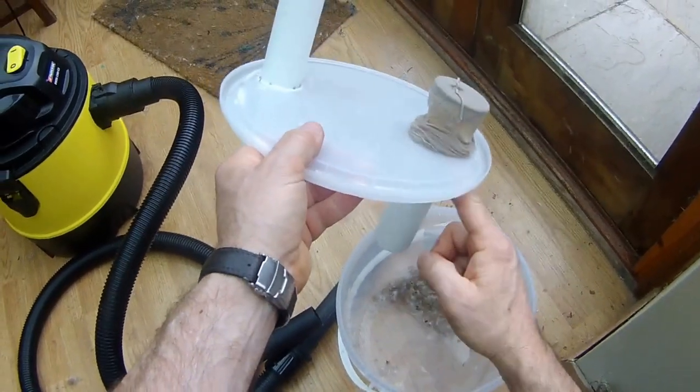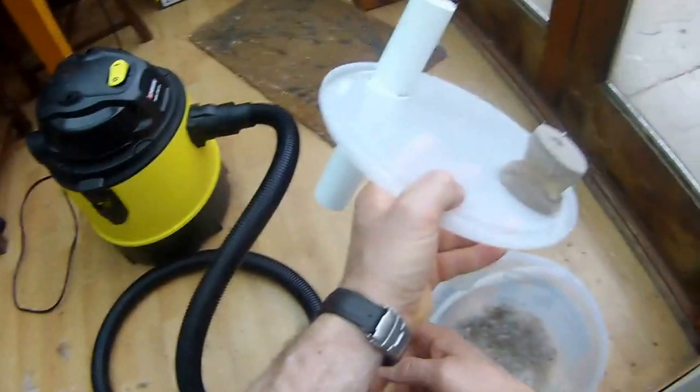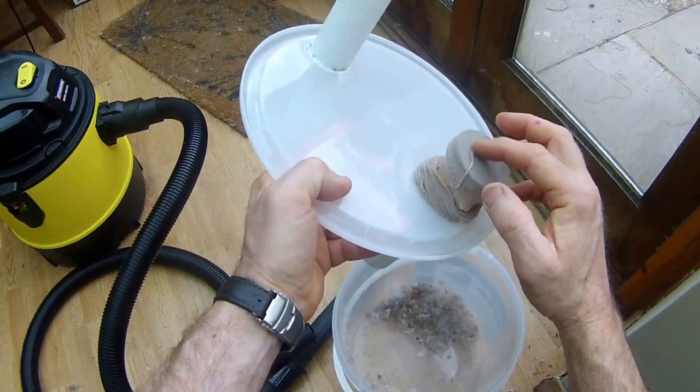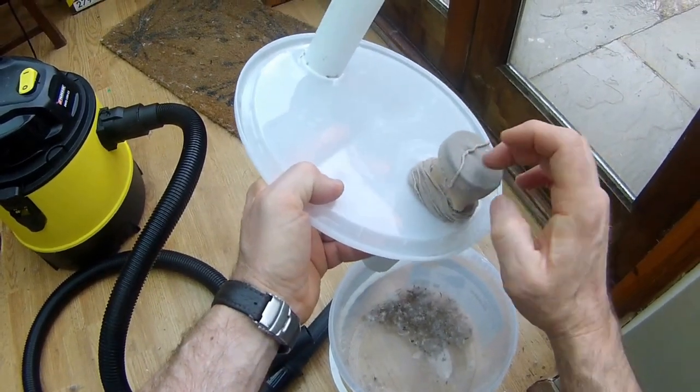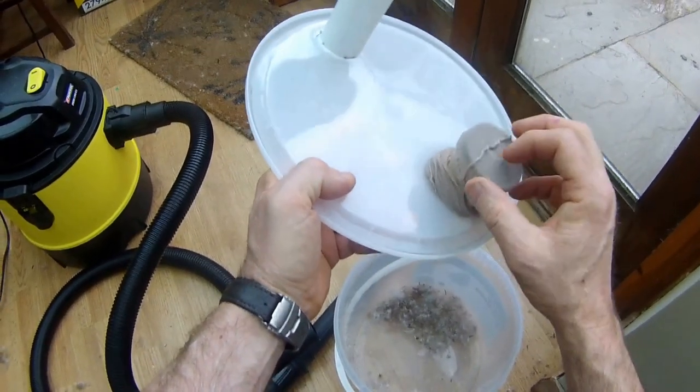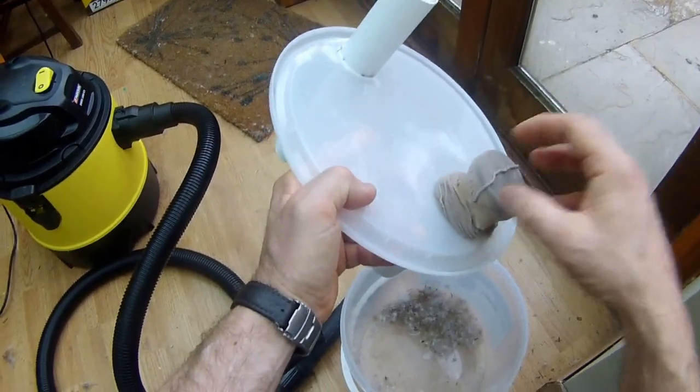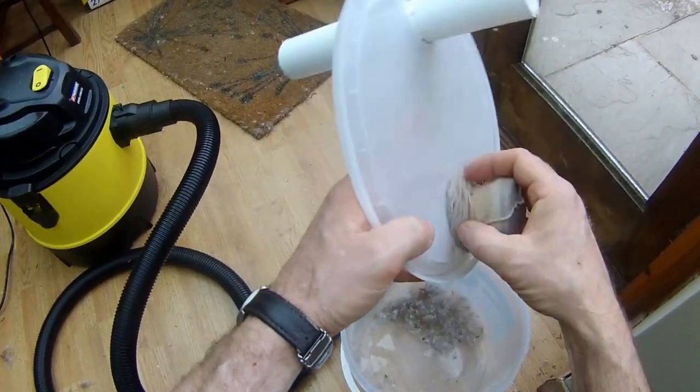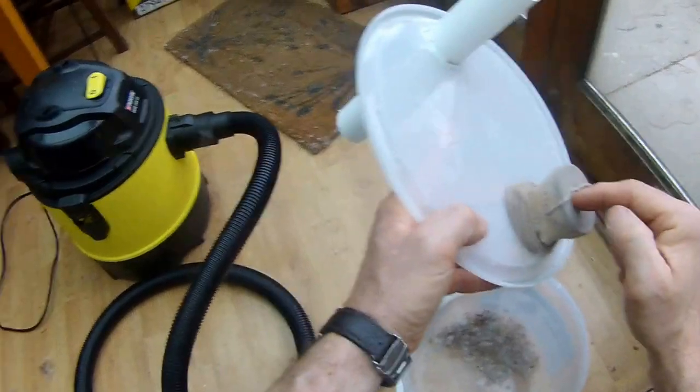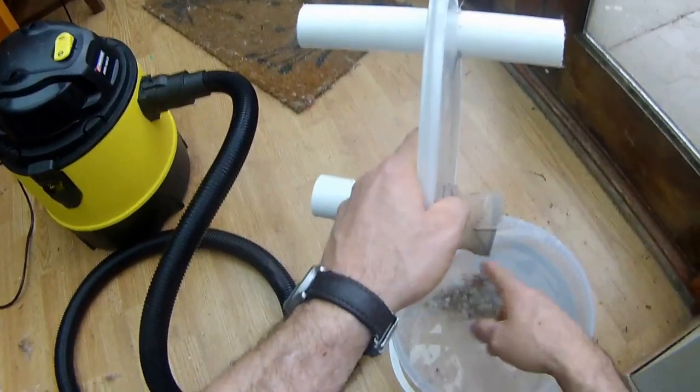On this end I've got the suction from the vac. I've put a bit of stocking over that. I've had to put a little mesh under the stocking to stop it getting sucked down the tube. But that's to stop any more down escaping from the receptacle.